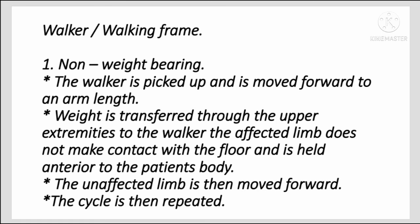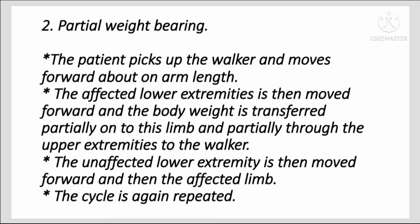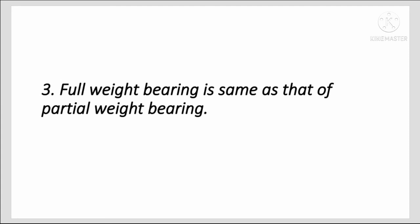Walker or walking frame: For non-weight bearing, the walker is picked up and moved forward to arm's length; weight is transferred through the upper extremity to the walker; the affected limb does not contact the floor and is held anterior to the patient's body; then the unaffected limb moves forward and the cycle repeats. For partial weight bearing, the walker is moved forward to arm's length, the affected lower extremity moves forward with partial weight transfer through it and partially through the upper extremity; then the unaffected lower extremity moves forward, followed by the affected limb. Full weight bearing is the same as partial weight bearing.